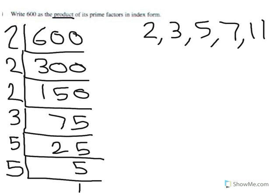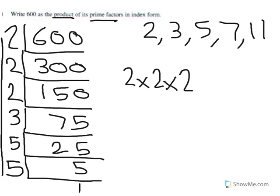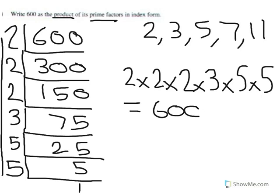So we need to write it as a product of its prime factors. These numbers going down here are the prime factors. We need to write that as a product. So that's 2 times 2 times 2 times 3 times 5 times 5. And if we were to multiply all of those together, it would equal 600. Almost done now.